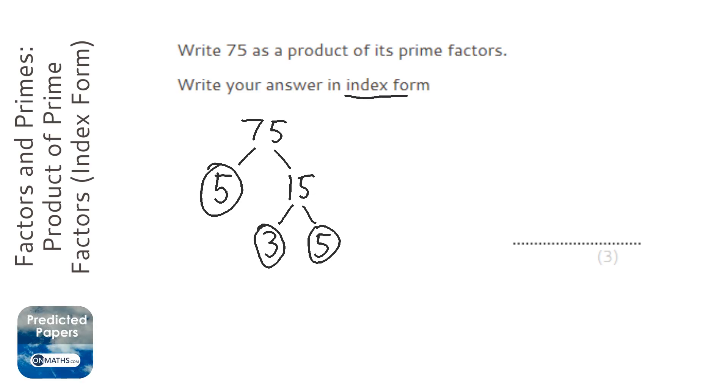Now it says it wants it in index form. So we're going to start off with 3, but there's no other 3s there. And write 3 times, and it's 5 times 5, which is going to be 5 squared.